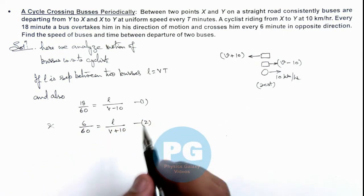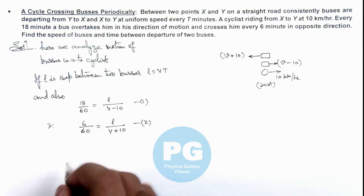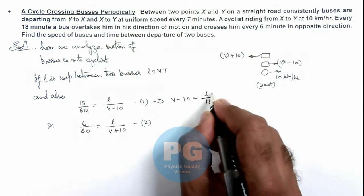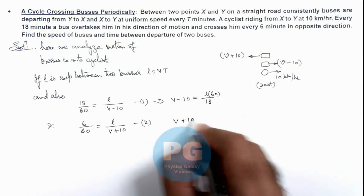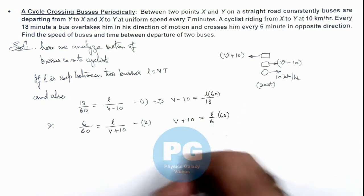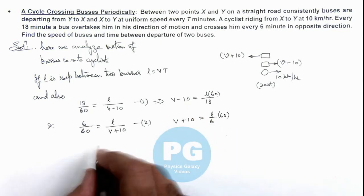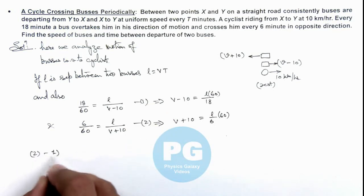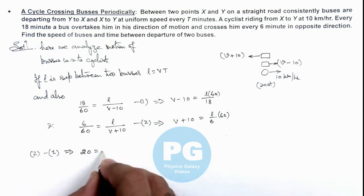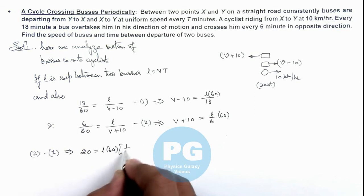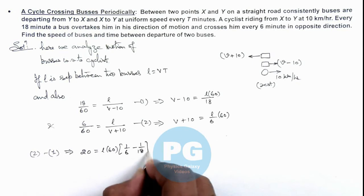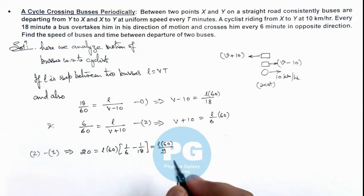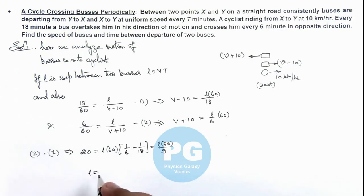To find v and L, we rewrite the equations as: v − 10 = L × 60 / 18, and v + 10 = L × 60 / 6. Subtracting equation 1 from equation 2, the left-hand side gives 20, and the right-hand side gives L multiplied by 60 times (1/6 − 1/18), which simplifies to L × 60 / 9. Solving this, the value of L is 3 kilometers.